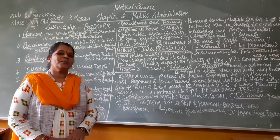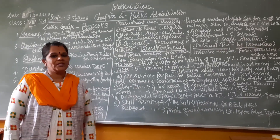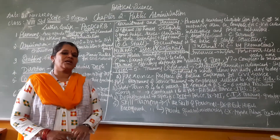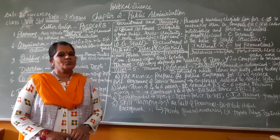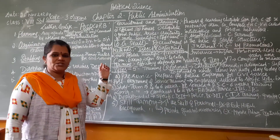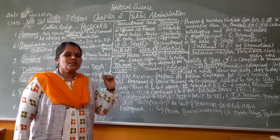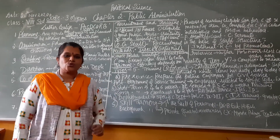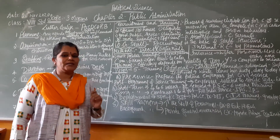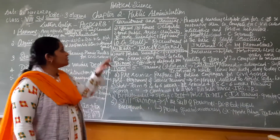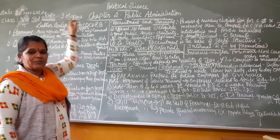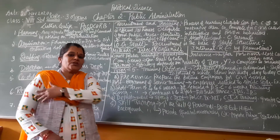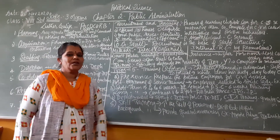Let us learn about the scope of public administration. Different political thinkers have their views regarding its scope. Woodrow Wilson, supported by L.D. White, says that public administration has a wider scope — that the three pillars of government, namely the legislature, executive, and judiciary, are all comprised within public administration.